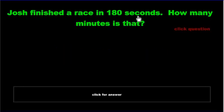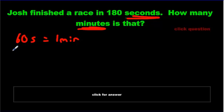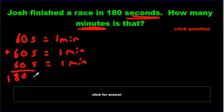Now it's your turn. Josh finished the race in 180 seconds — how many minutes is that? I'm going to underline seconds and minutes. Seconds and minutes — what does the song say? 60 seconds in one minute. So I write 60 seconds in one minute. It says 180 — you should know from practicing that three 60s makes 180. If you add them up, you get 180. So 180 seconds equals three minutes.